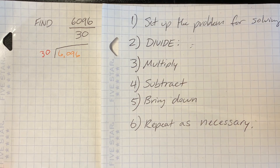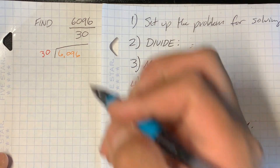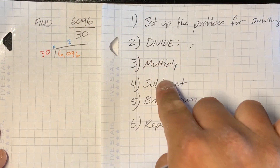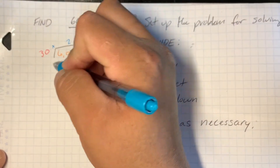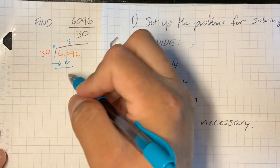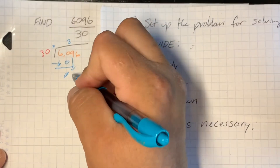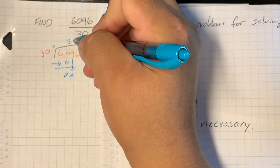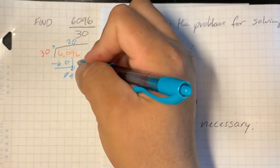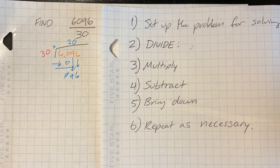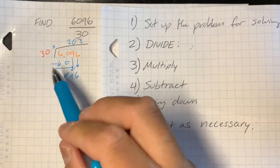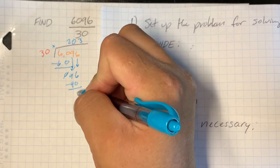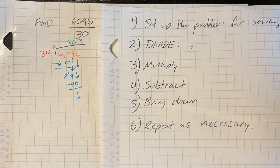How many times can 30 go into 60? Twice. Multiply: 30 times 2 equals 60. Subtract: 60 take away 60 is nothing. Bring down your 9. How many times can 30 go into 9? It can't, so you have to annex a 0 there and bring down your other 6. Now how many times can 30 fit into 96? Three times. 30 times 3 equals 90. 96 take away 90 equals 6.